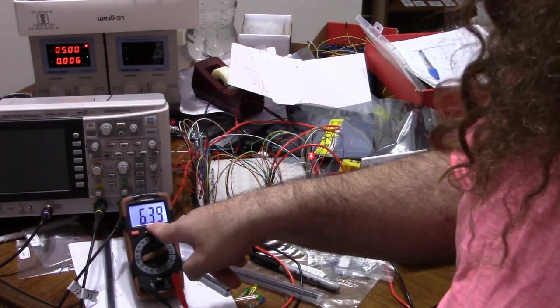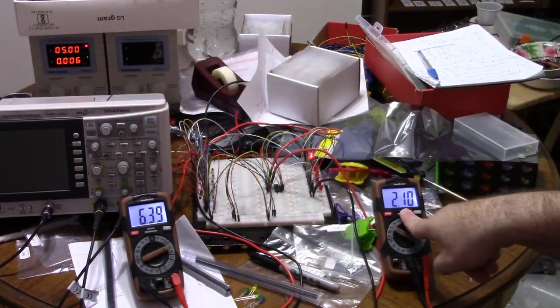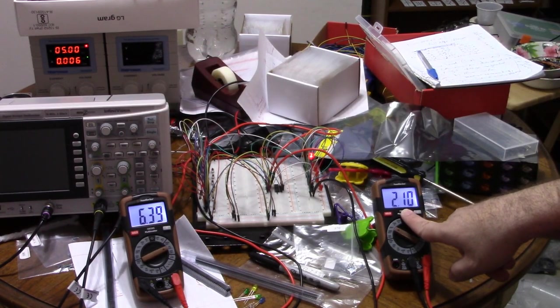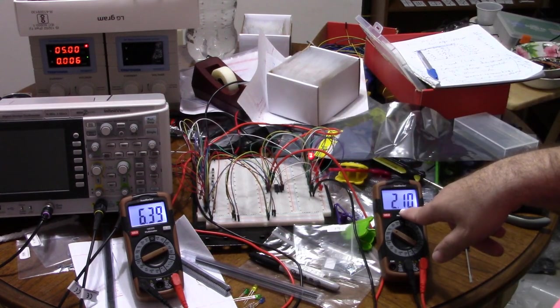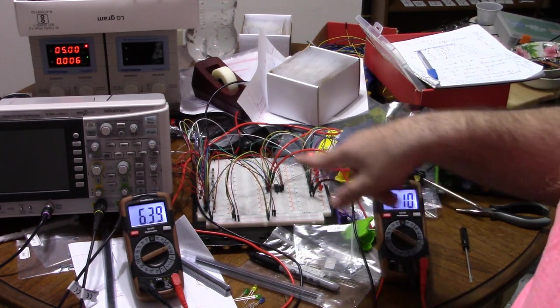If I turn on the first LED, 6.39 milliamps, and across the LED is 2.10 volts. I can turn it back off, back to zero current, zero volts. The output of the chip is regulating itself.